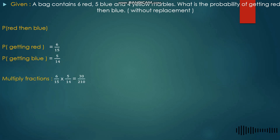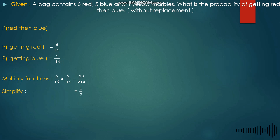We multiply the fractions: 6 over 15 times 5 over 14. Six times 5 gives us 30, and 15 times 14 gives us 210. Simplifying 30 over 210 gives us 1 over 7. So the probability of getting red first then blue without replacement is 1 over 7. Therefore the correct answer is Letter A.